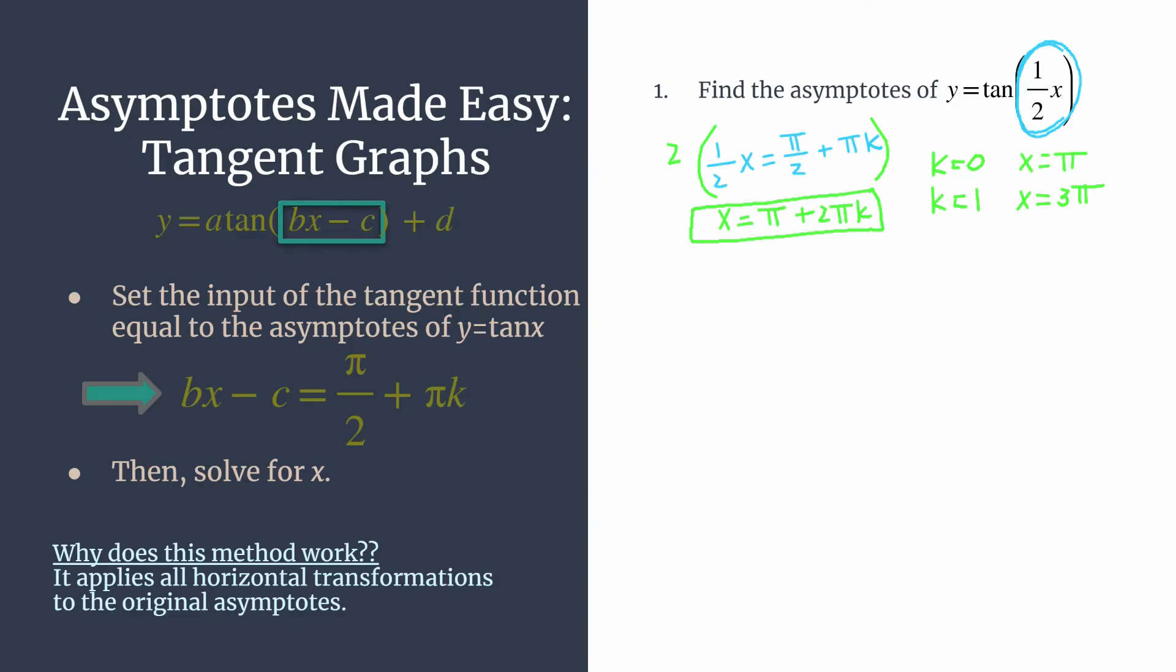That's simple enough. That's the asymptotes for y equals tangent one half x. Let's look at one more example.